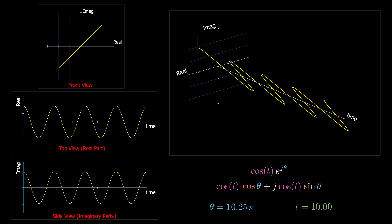In AC analysis, most of the time we are interested in the average value of the voltage and current, not the instantaneous. For instance, when we measure the current drawn by a motor, we are interested in the average value — we don't want to measure current at each instant of time. The average of a sinusoidal signal is called the RMS value and is equal to the peak amplitude divided by the square root of 2.